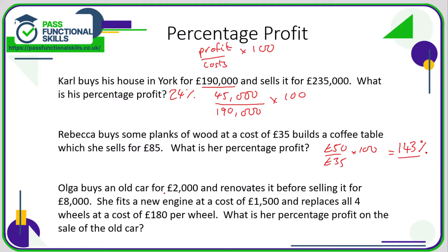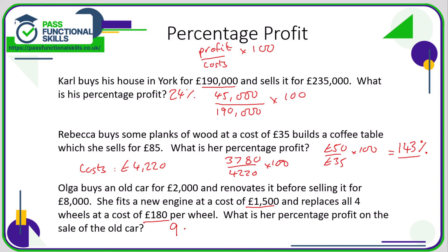In the final example, Olga buys a car for £2,000 and renovates it. She spends £1,500 on an engine and four wheels at £100 per wheel — wait, four wheels at £180 each comes to £720. Adding the engine at £1,500 and the car at £2,000, her total costs are £4,220. Her profit is £8,000 minus £4,220, which is £3,780. So £3,780 divided by £4,220 times 100 gives 89.57 — let's round that to 90% profit.